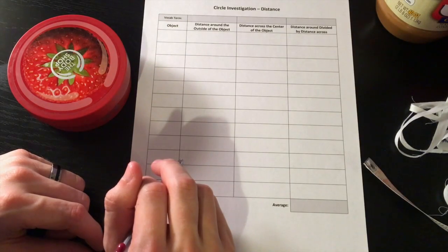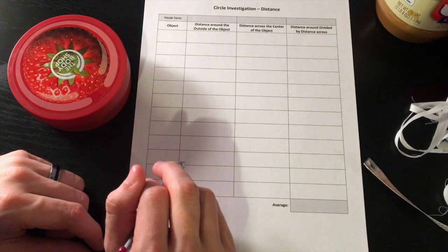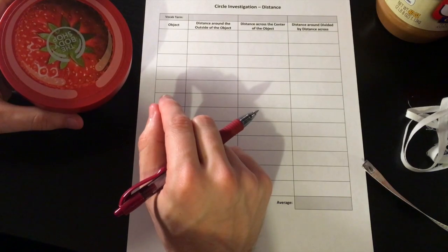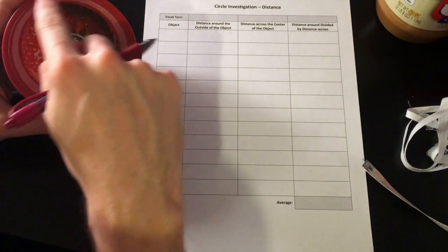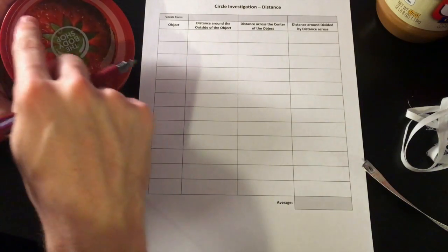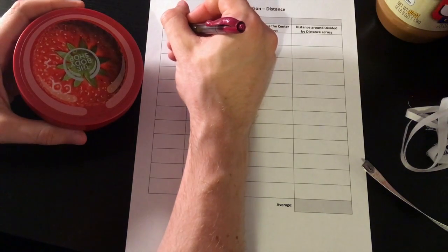I'm going to show you how to fill in the data table with one of my circles, and then I'll have you pause the video and collect measurements from the circles you have from your household. I'm going to demonstrate using this lotion tin. First, we'll measure the distance around the outside of the object, and then the distance across the center. Let's label the object as Top of Lotion.